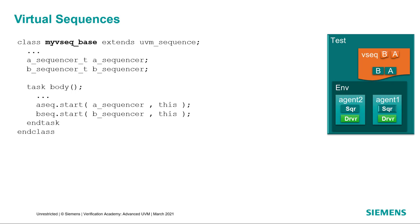In order to coordinate the execution of sequences on multiple sequencers, UVM includes the concept of something called a virtual sequence. The difference between a sequence and a virtual sequence is that while a sequence generates transactions, a virtual sequence just manages the execution of other sequences. Notice that we don't have to specify the request or response type for the base UVM sequence, because it defaults to the UVM sequence item.